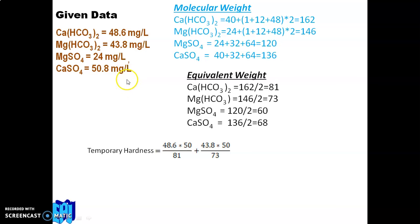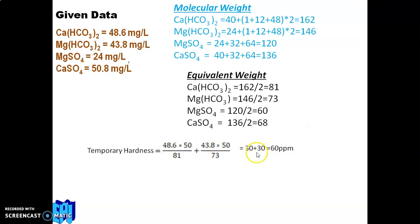Temporary hardness is due to carbonate salts — Ca(HCO₃)₂ and Mg(HCO₃)₂. Substituting into the equation: Temporary hardness = (48.6 × 50 ÷ 81) + (43.8 × 50 ÷ 73) = 30 + 30 = 60 ppm (mg/L).